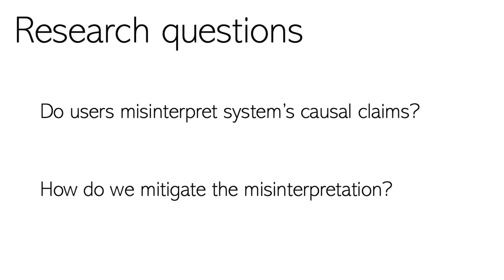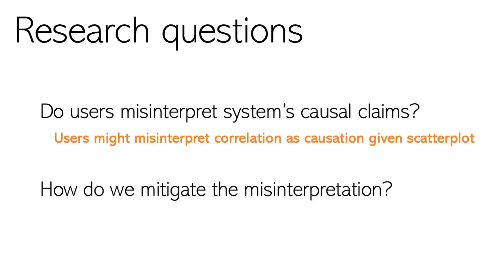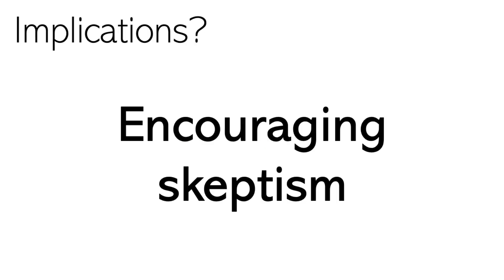Let's go back to our research questions and see what we have learned. By presenting visual evidence about correlation like a scatter plot, these systems could increase the likelihood for people to accept causal claims even when they do not sound reasonable. And a simple warning that correlation is not causation is not always effective in increasing people's awareness. So when question-answering systems do not provide reliable answers, these systems could be designed in ways to encourage skepticism. For ideas on designing such systems, you can learn more from our paper at terencelaw.github.io.